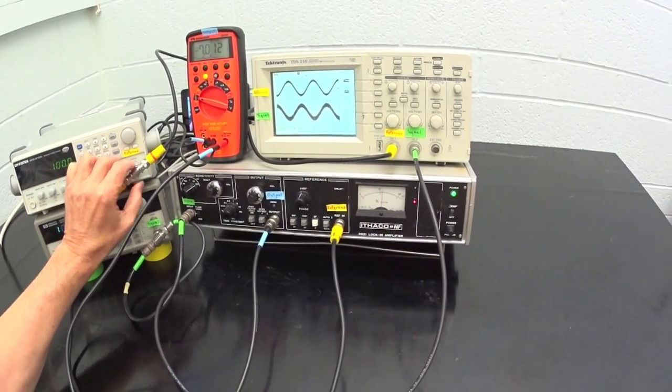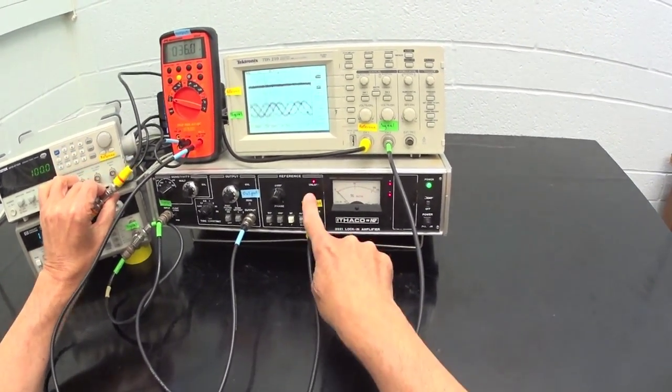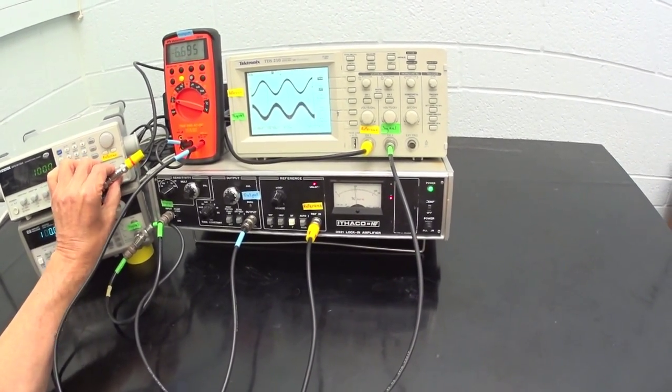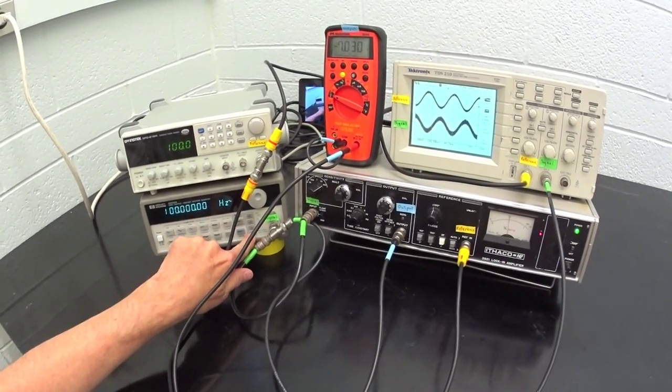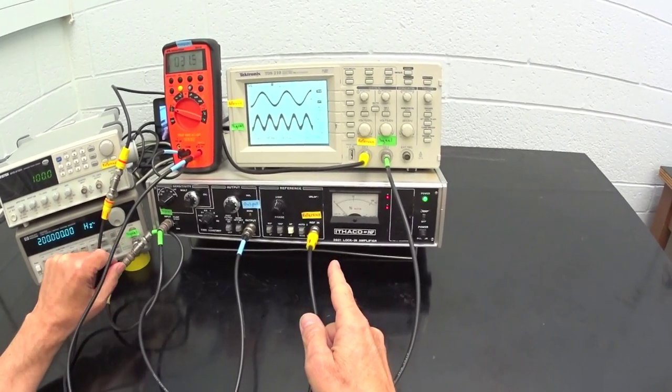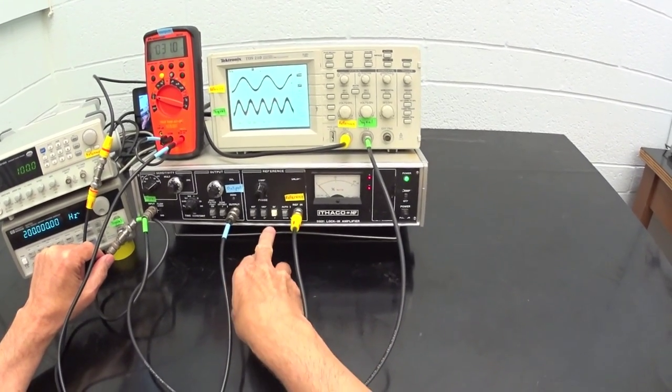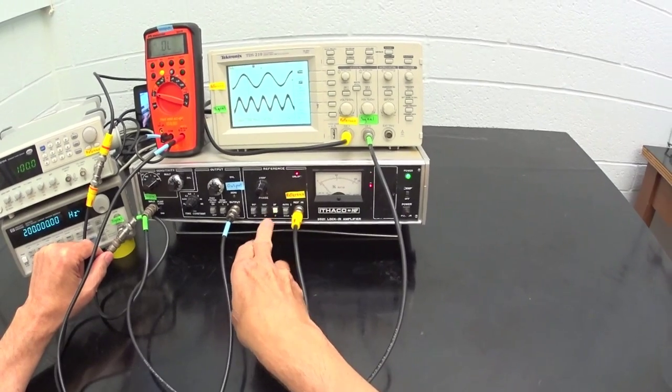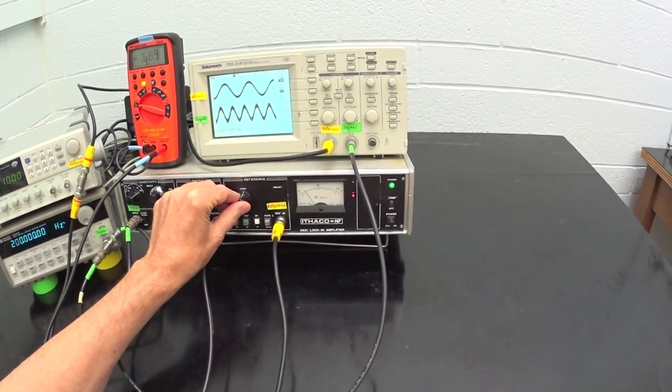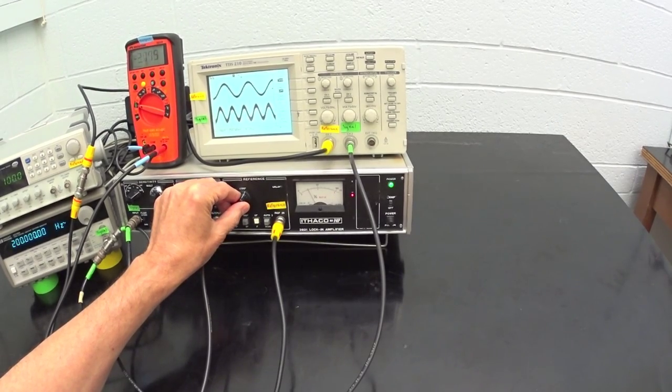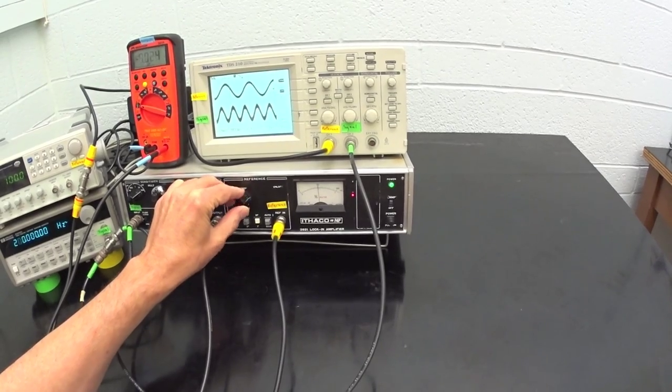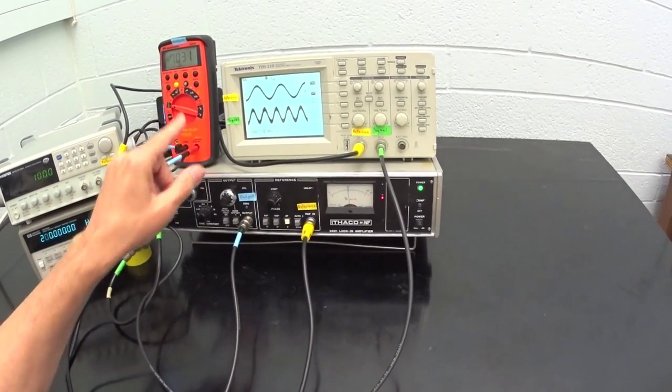For example, if I unplug the reference, the unlock light turns on, and the output becomes undefined, with the plus and minus phase lights flashing. If I adjust the signal away from the reference frequency, the output goes to zero. Here the signal is twice the reference, and the output is zero. Lock-ins usually have a 2F switch that allows you to measure the amplitude and phase of signals that have twice the frequency of the reference. Pressing the 2F switch, the output is non-zero. We don't use this feature much in the advanced lab right now, but there are some situations where it is very useful, so it is worth being aware that it exists.